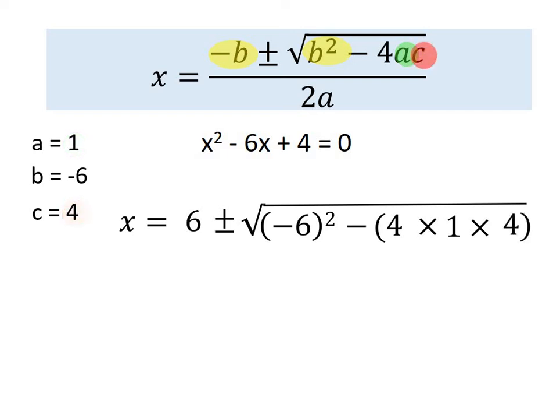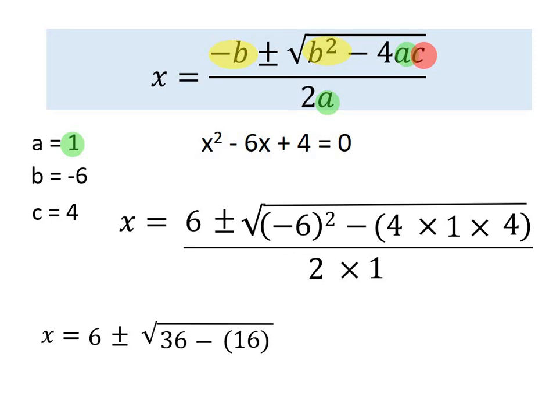Then we want to put minus 4 times 1 times 4, because c is 4. And all over 2a, so 2 times 1. We can then simplify that a little bit before putting it into our calculator, or you can type it in just like that. So I'm going to change this to 6 plus or minus the square root of 36 minus 4 times 1 times 4, which is 16, all over 2 times 1, which is 2.